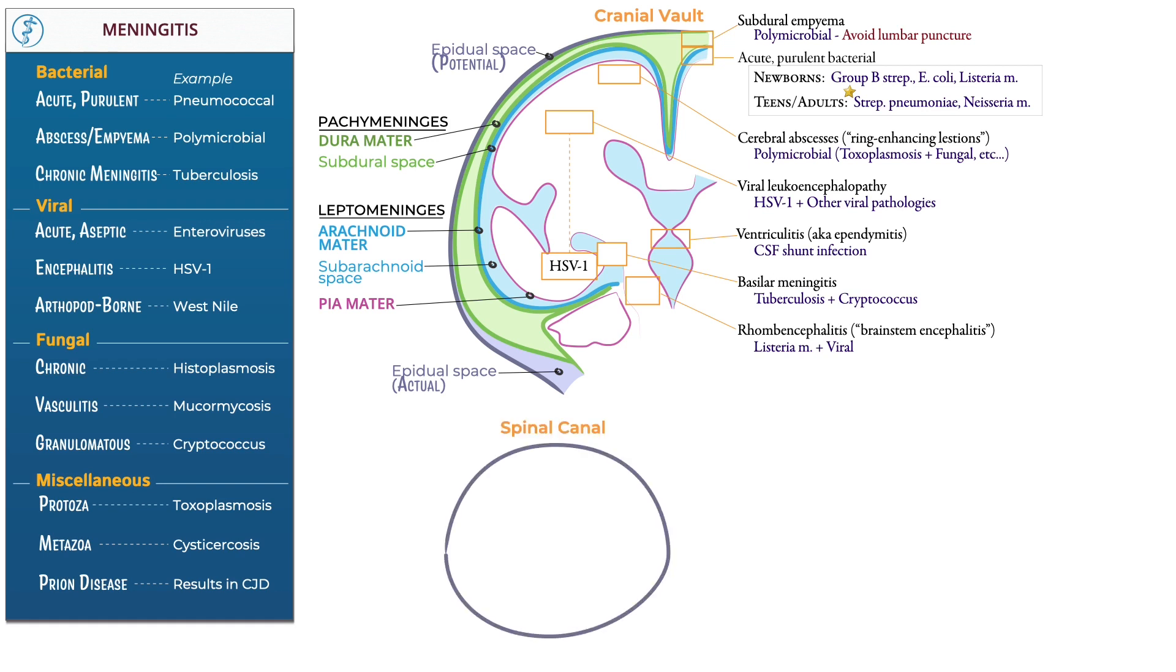let's address spinal meningitis. Outline the spinal canal and the spinal cord. Next, let's draw the meningeal layers of the spinal canal from inside to out. Draw the pia mater, which directly adheres to the spinal cord and nerve roots. Then, draw the arachnoid mater and label the subarachnoid space.